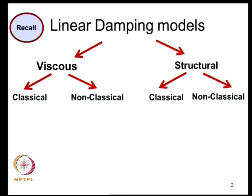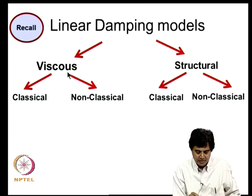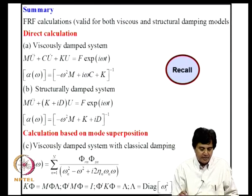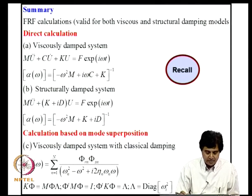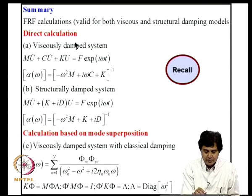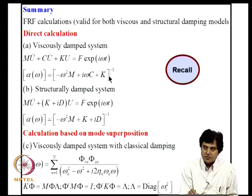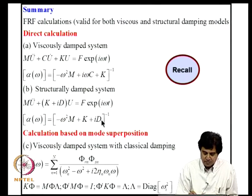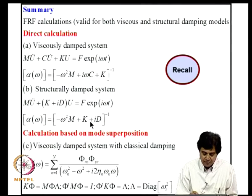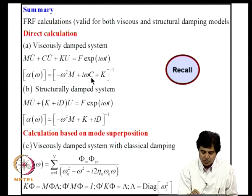We have classified damping models as viscous and structural, and each one is either classical or non-classical. We have developed expressions for frequency response functions for all these alternative damping models. One way of doing that is to invert the dynamic stiffness matrix: the equation of motion expressed in the frequency domain gives the matrix of receptance functions as the inverse of that matrix. This procedure is universally valid no matter whether damping is viscous or structural, classical or non-classical.